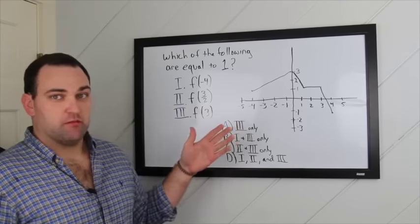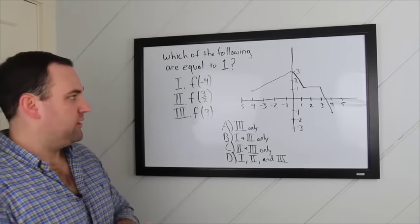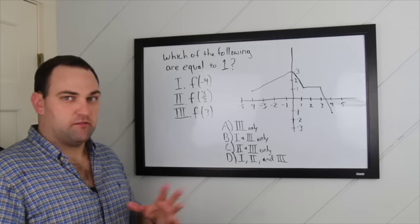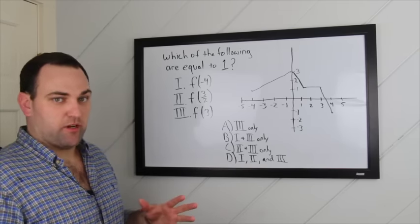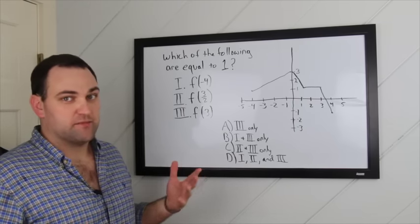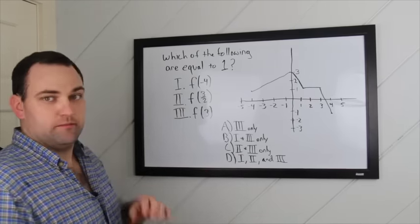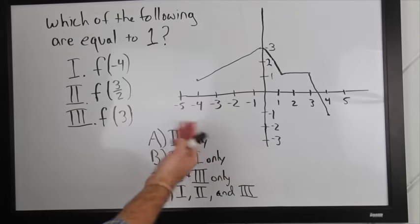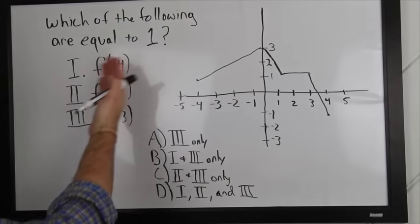So, a lot of students see graph problems, and they freak out immediately. It's one of the biggest things that I see students kind of get worried about and want to just skip right away. But, in reality, a lot of times they're easier than they seem. So, our question here gives us our graph, and it says, which of the following are equal to 1?